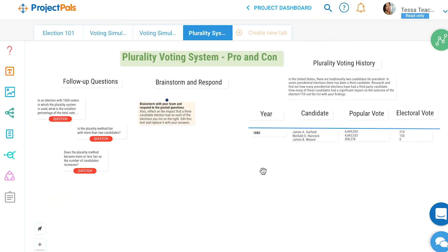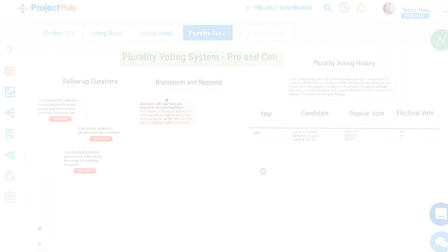By the end of this project, students will understand how the pros and cons of the plurality system can distort voters' real choices. Ready to start this project with your students? Watch a brief tutorial video to clone and assign this project to your class.